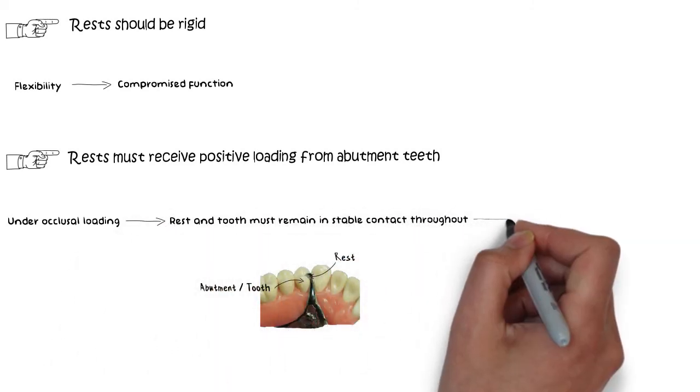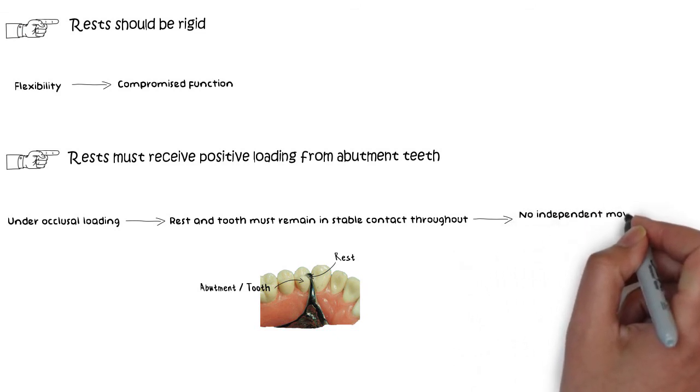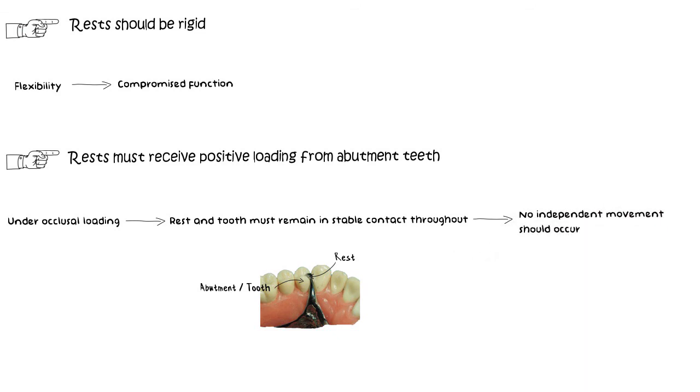And no independent movement of either the denture or the rest should occur, which will otherwise cause slippage of the denture or something much more worse. So in short, to perform adequately the rest needs to be rigid and also must receive positive loading from the abutment teeth.